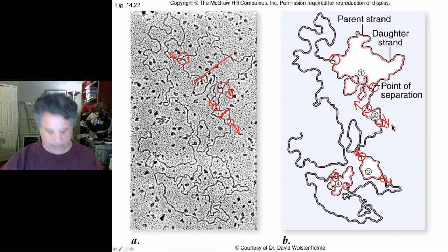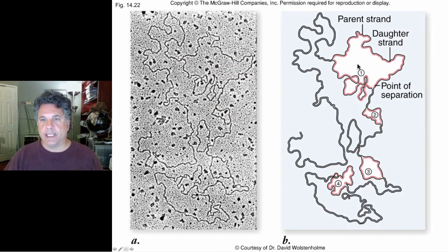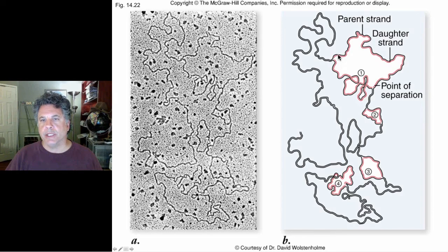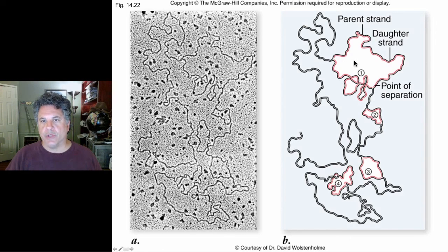In the next part of this lecture, we're going to examine what happens at the replication fork — the enzymology of DNA replication — and look at the way new nucleotides are inserted into growing strands of DNA, built up from the information present in the parental strands, and how new daughter double helices are produced.